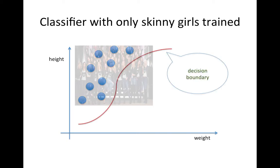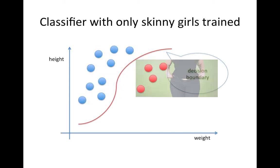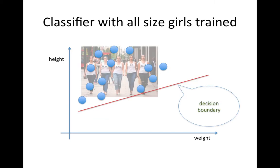The red line here is the decision boundary line. You can see your classifier was only trained with skinny supermodels for jeans and built jeans only for the skinny girl. As a result, the other size girls couldn't buy your jeans. And this is the decision boundary when you hire various size models, which means you have various data to train your classifier.